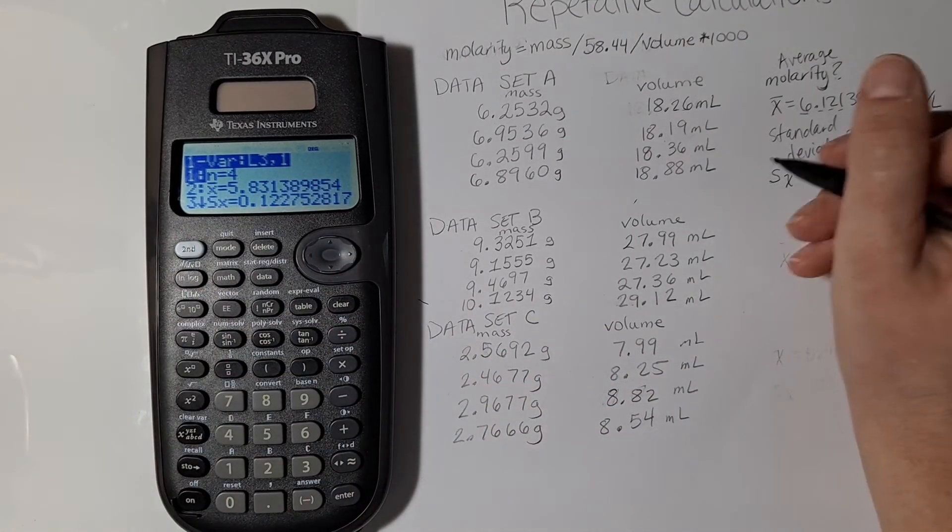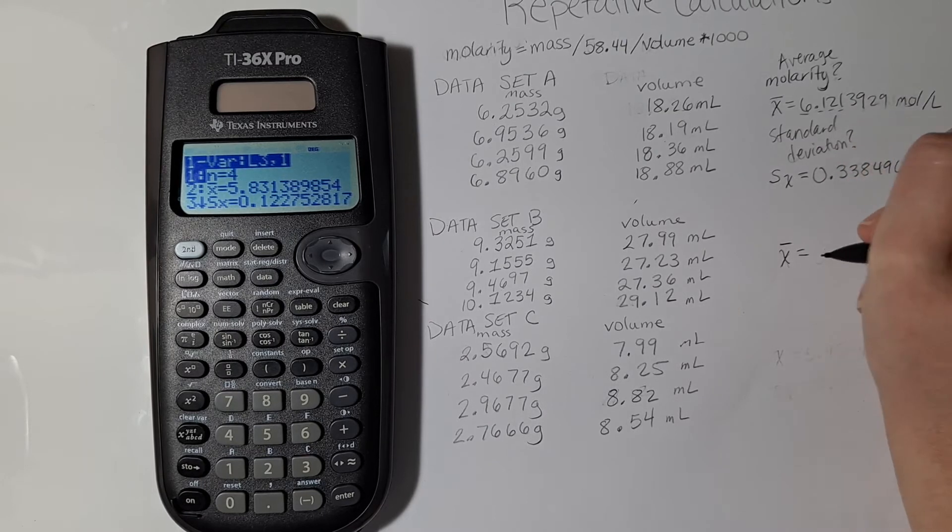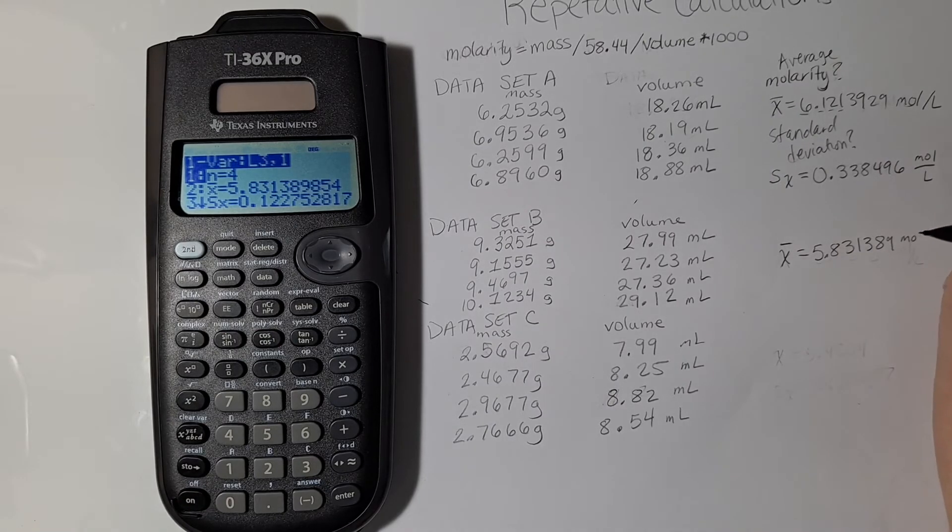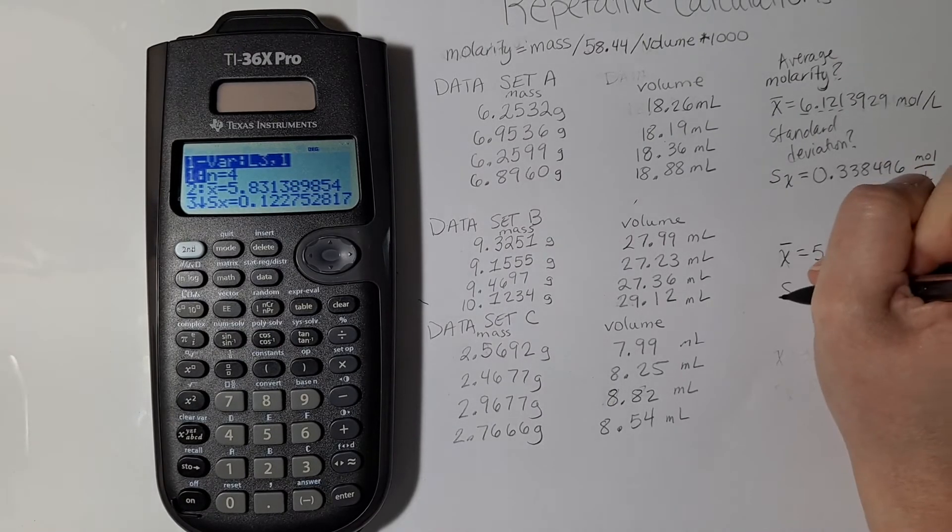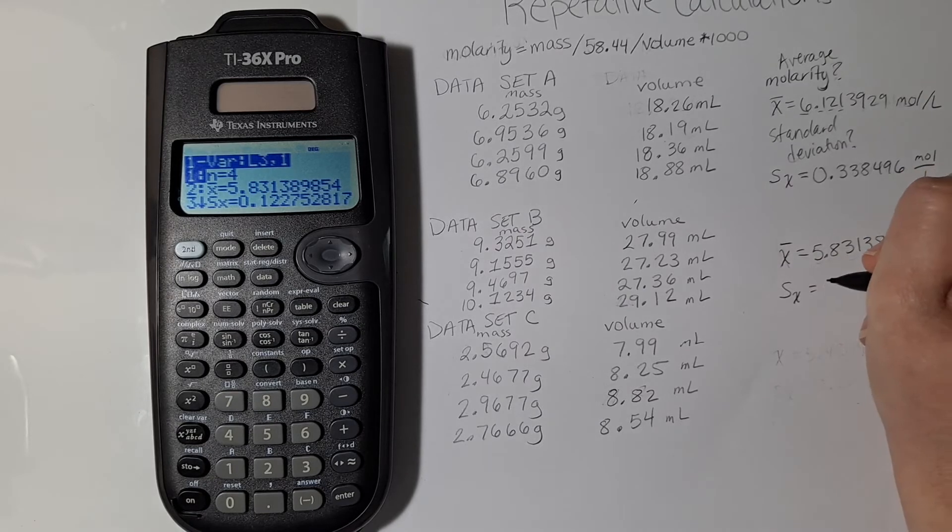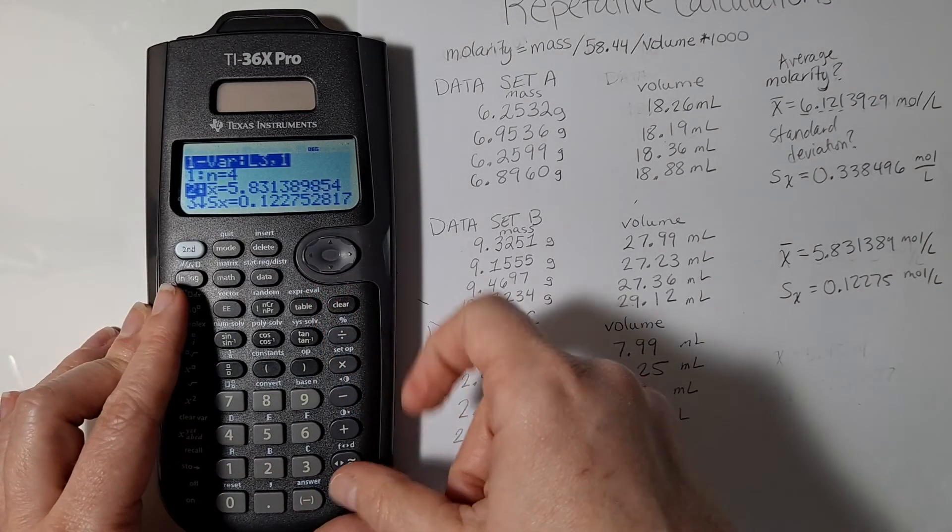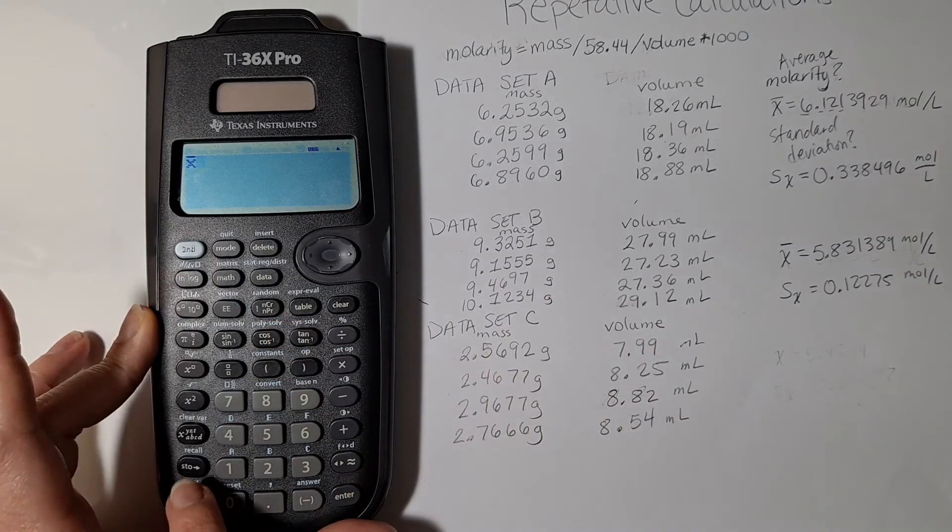And now I have my average is equal to 5.831389 moles per liter and my standard deviation is equal to 0.12275 moles per liter. And just like last time, if I needed to use these numbers in other calculations I could store them as a letter.